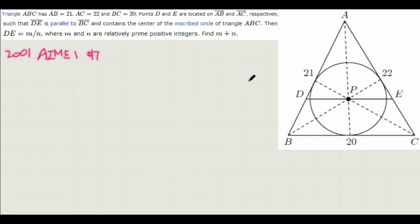So first, we see that we have a triangle ABC with lengths of 20, 21, and 22. We have two points D and E on AB and AC, respectively, with DE parallel to BC, and DE going through the incenter of ABC. And we want to find the length of DE.